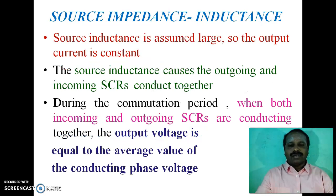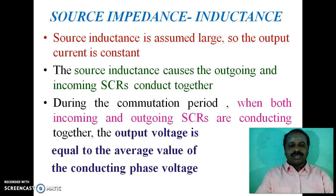Now we consider the source impedance as inductance. The source here refers to alternators, that is, synchronous generators. Synchronous generators are made up of windings, and this winding consists of large inductance, so the output current is constant. The source inductance causes the outgoing and incoming SCRs to conduct together. During the commutation period, when both incoming and outgoing SCRs are conducting together, the output voltage is equal to the average value of the conducting phase voltage.